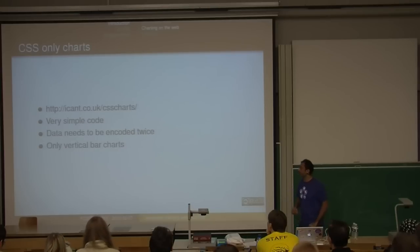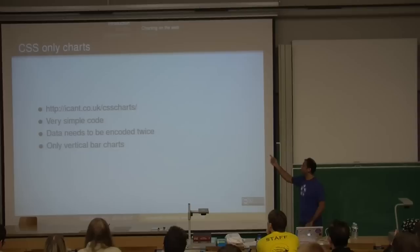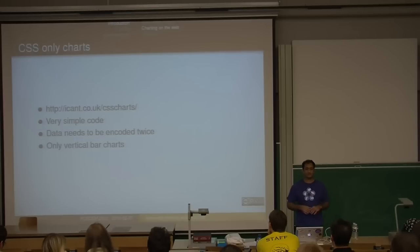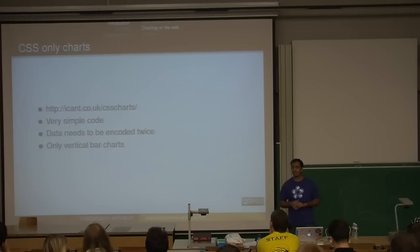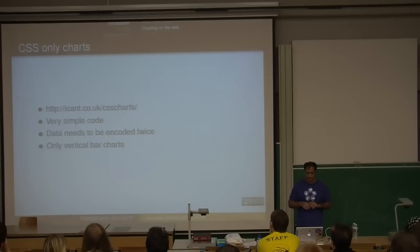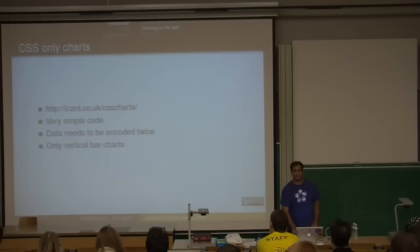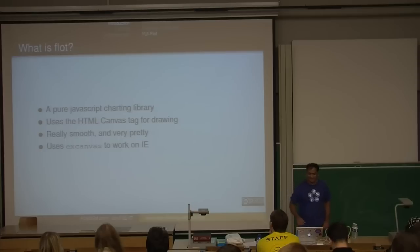CSS-only charts — I don't have internet access here, but there's a URL: icont.co.uk, CSS charts. Very simple code: a list item and CSS to enhance it into a chart. The thing is your data needs to be encoded twice — once in the actual data and once in the stylesheet. Currently he only supports vertical bar charts, though horizontal bars might be possible too.